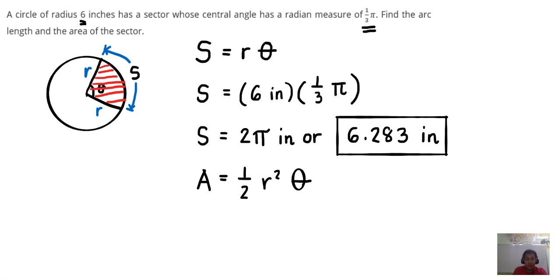We just need to substitute the values of r and theta. So this is one-half times six inches squared, and then theta is one over three pi.